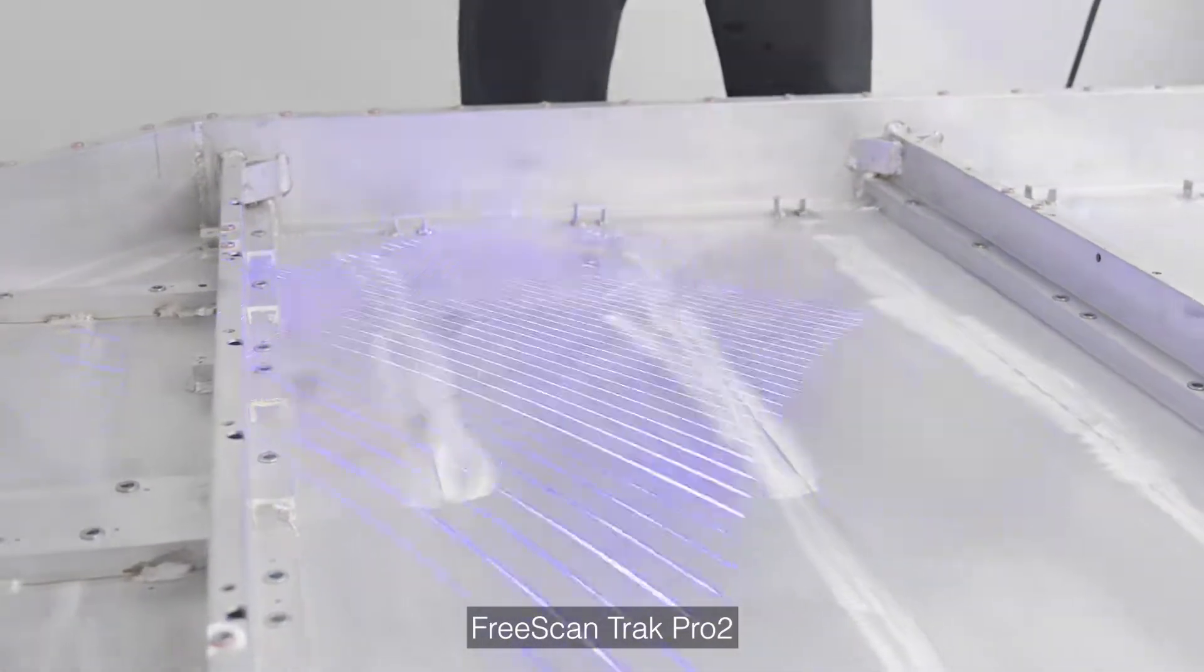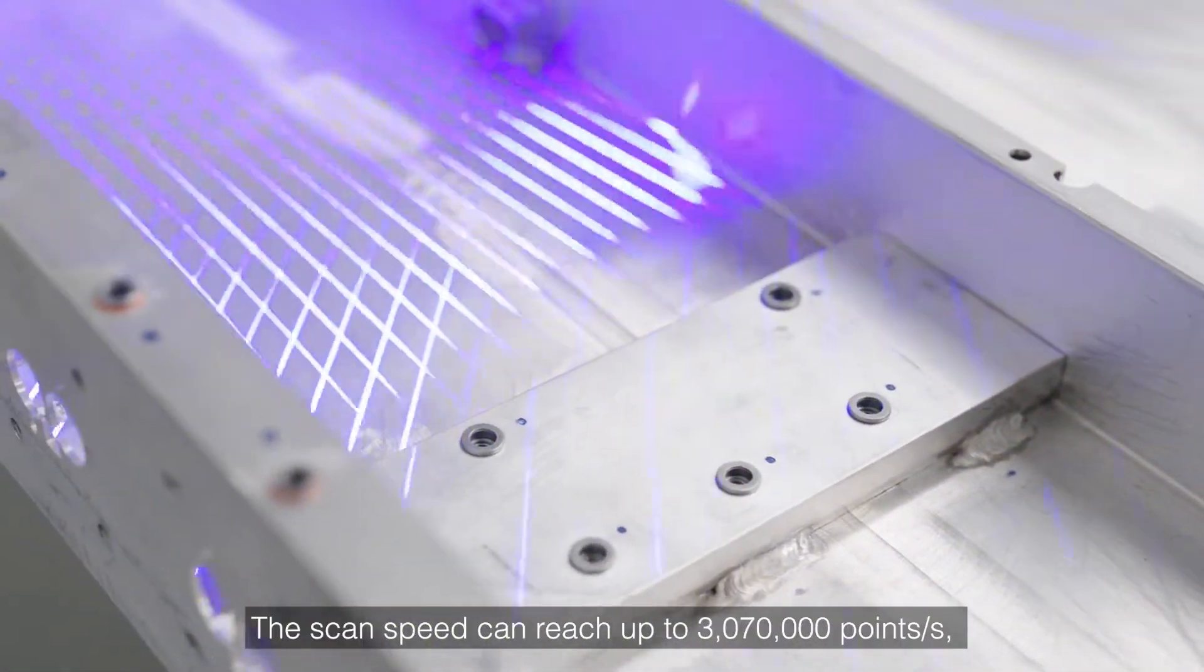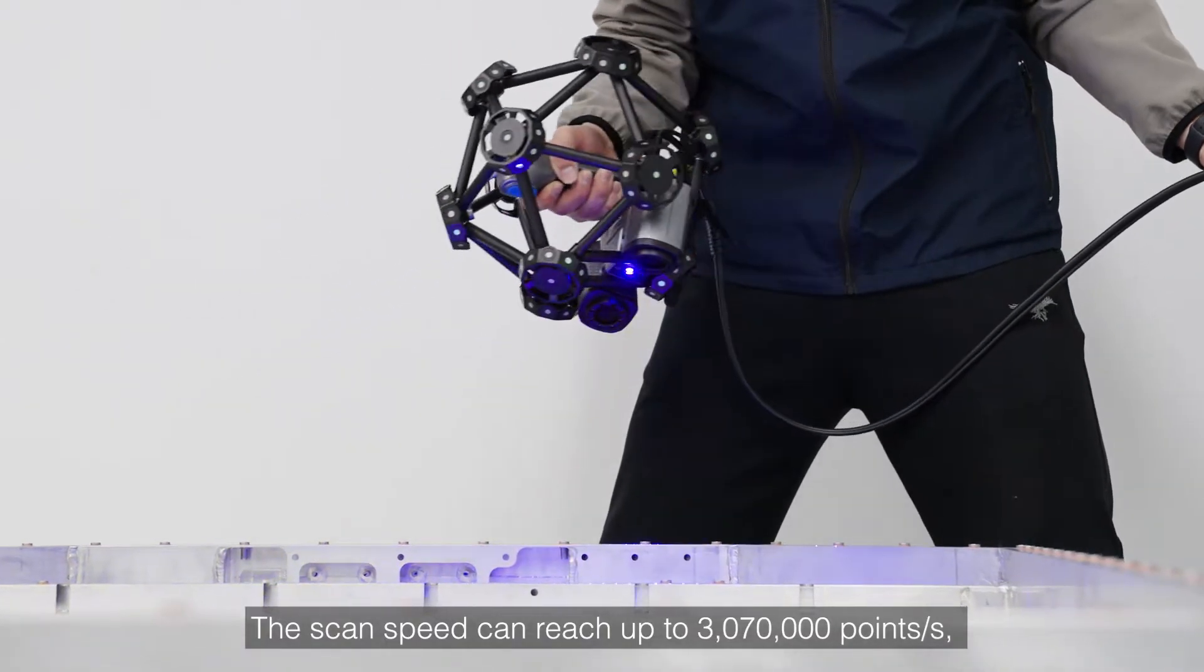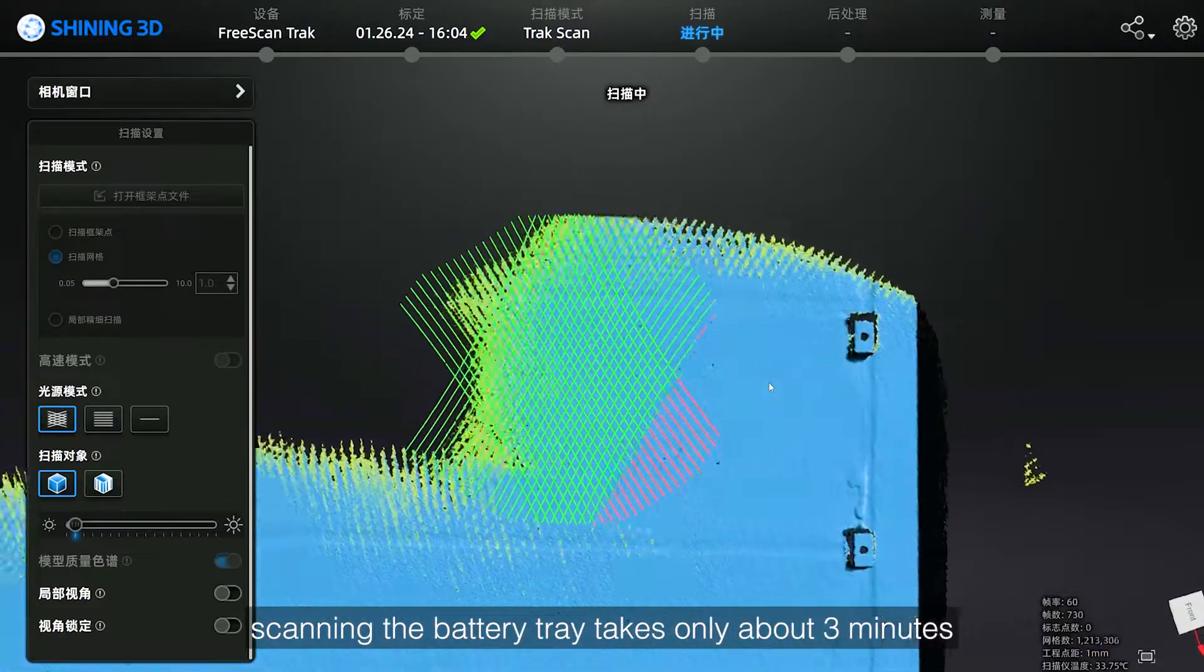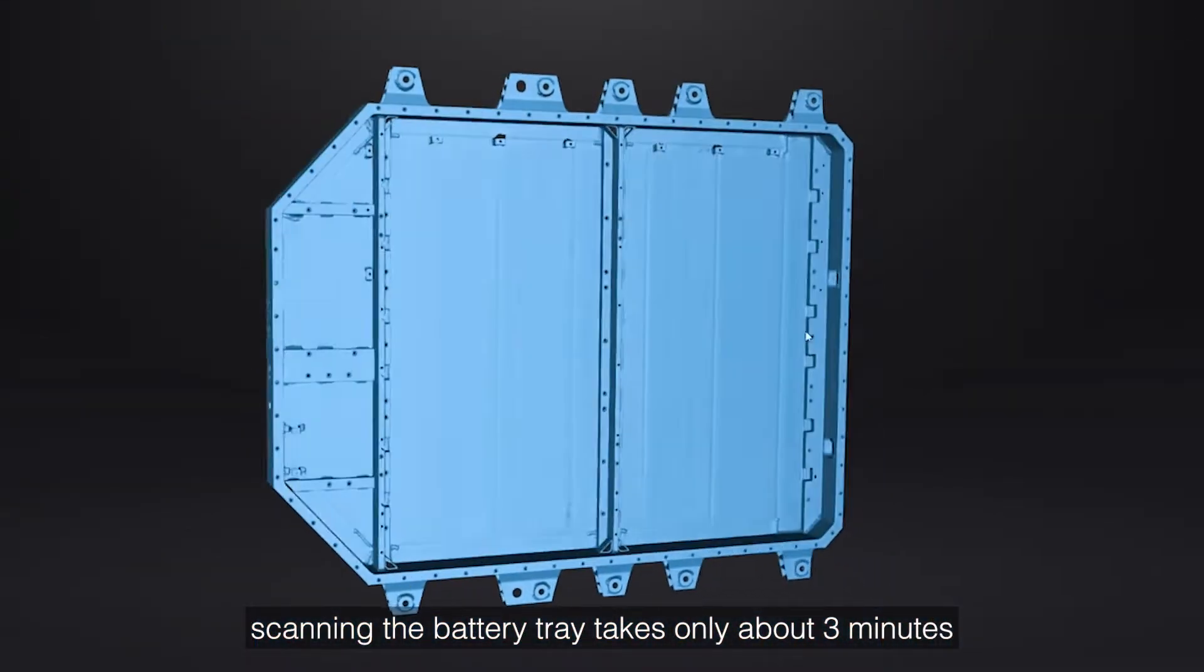FreeScan Track Pro 2 equips 50 blue laser lines. The scan speed can reach up to 3,070,000 points per second. Scanning the battery tray takes only about 3 minutes.